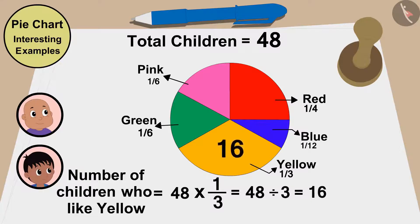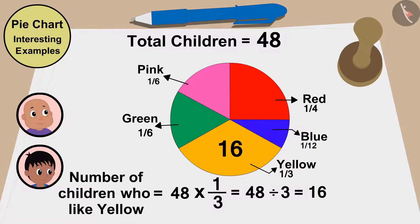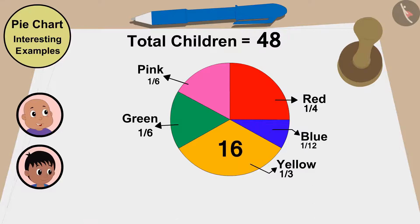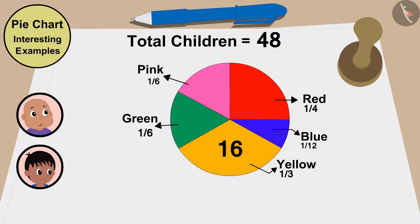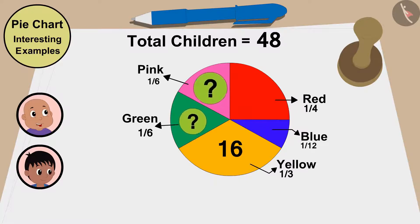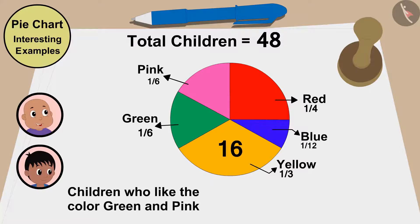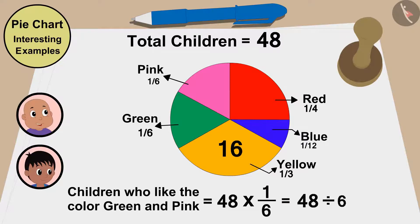'A total of 16 children like yellow.' Bablu says, 'Wow Raju, this is so easy! And look — these parts show that the number of children who like green and pink are very similar, meaning the same number of kids have liked pink and green.' Raju calculates, 'This part is one sixth of the pie chart. So green and pink is 48 multiplied by one sixth, or 48 divided by six — that is, eight children. So eight children like green and eight like pink.'